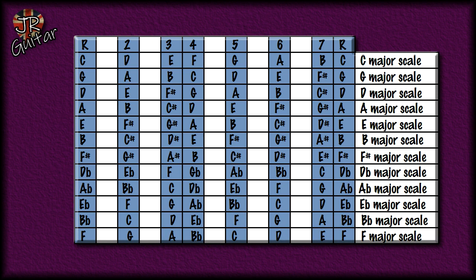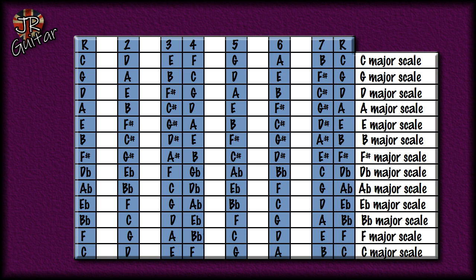The fifth note of the B flat major scale is F, so let's have the F major scale. And the fifth note of the F major scale is C — which takes us back to where we started with the C major scale. So we've gone to the fifth note each time, going around in a big circle and coming back to C major again — hence why it's called the circle or cycle of fifths.